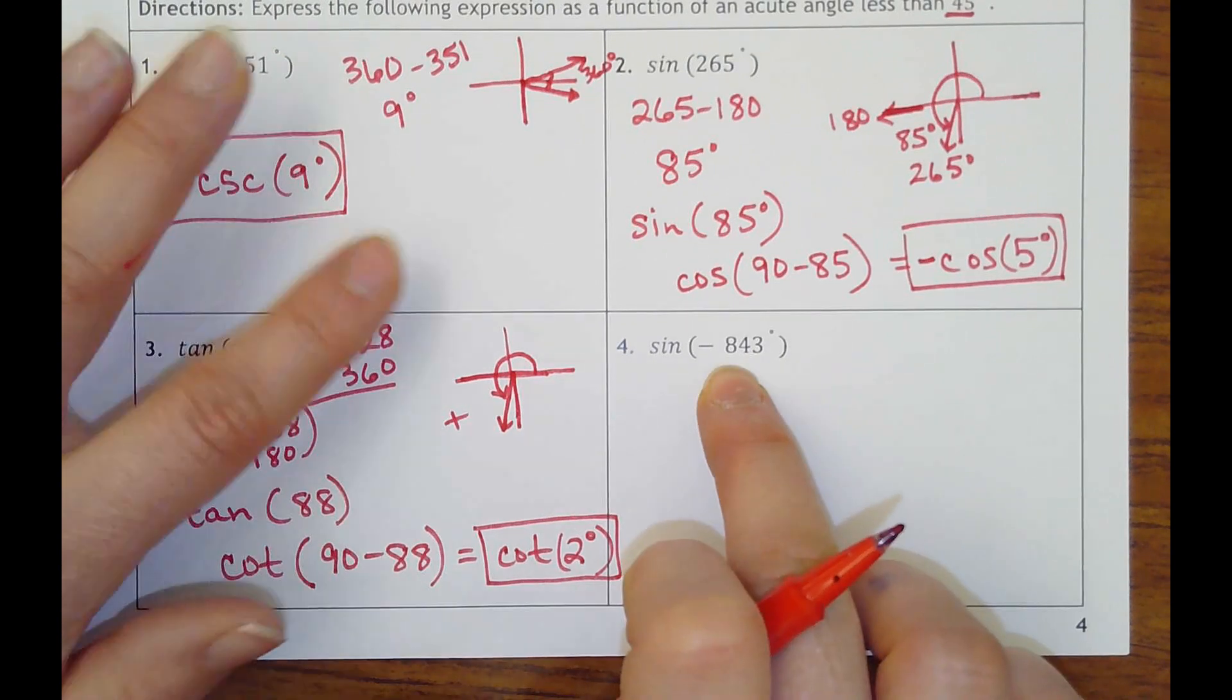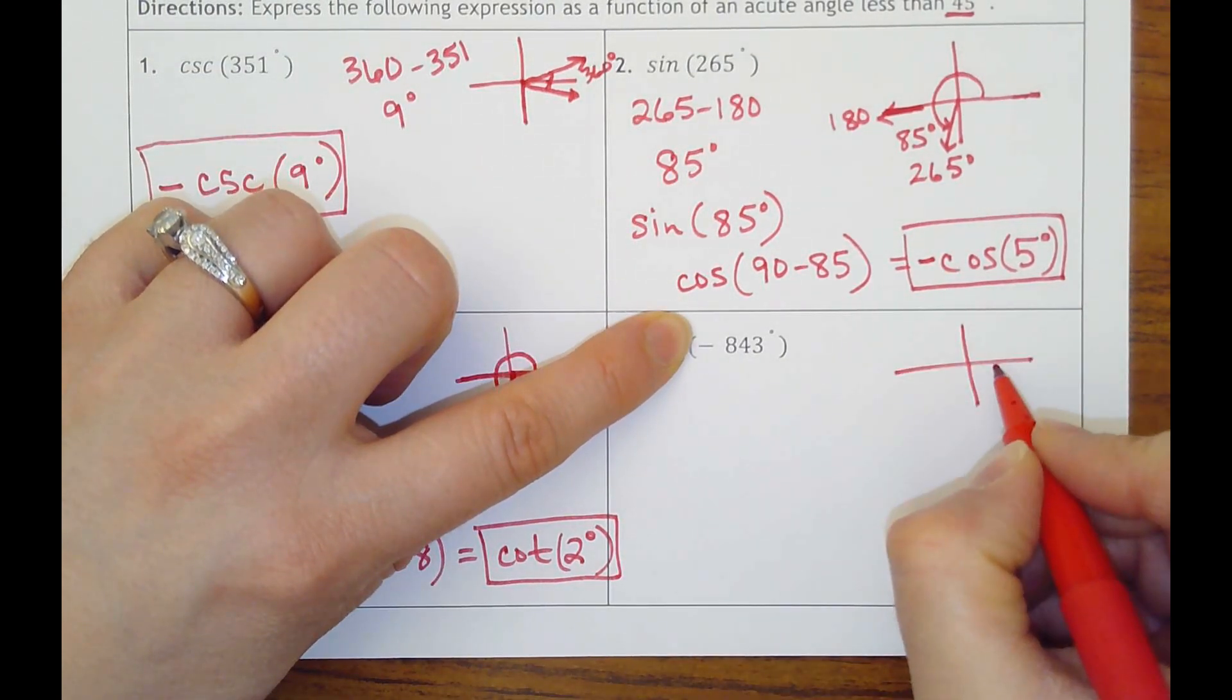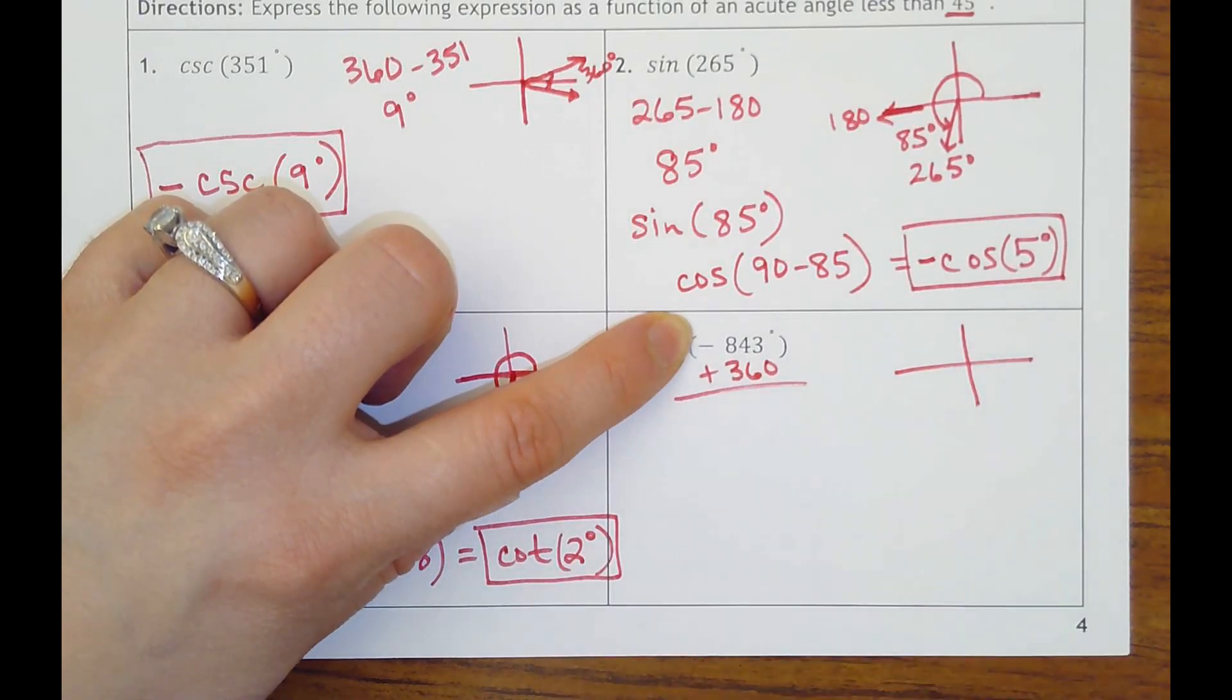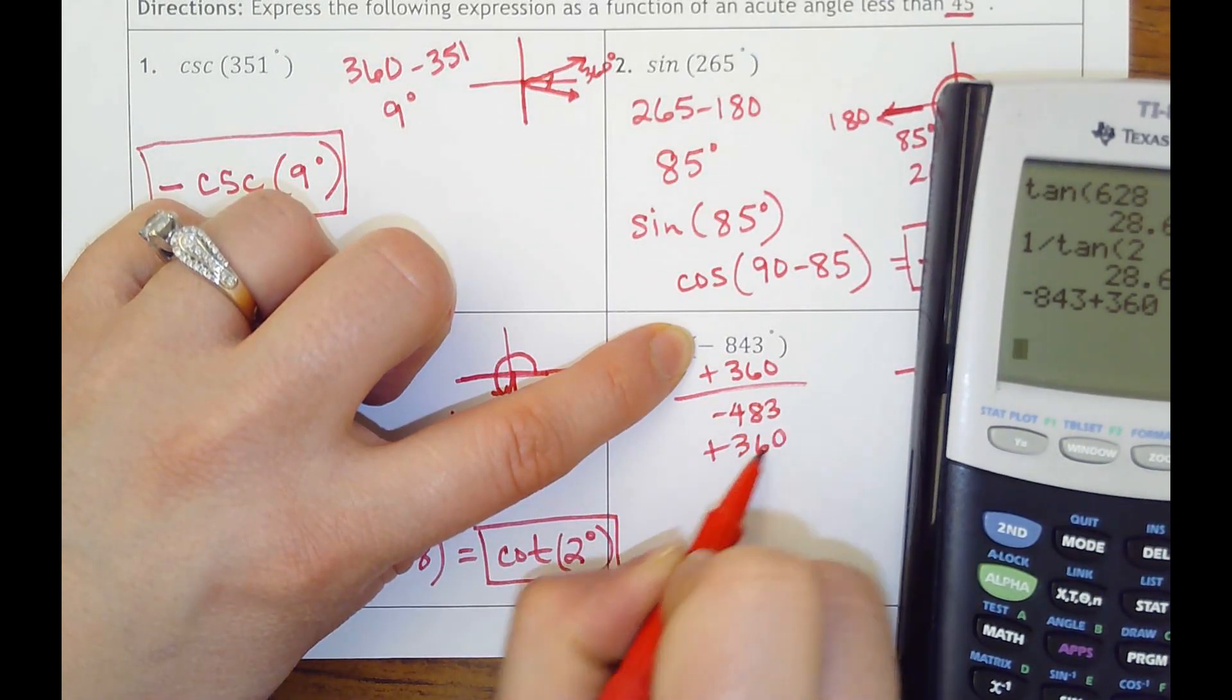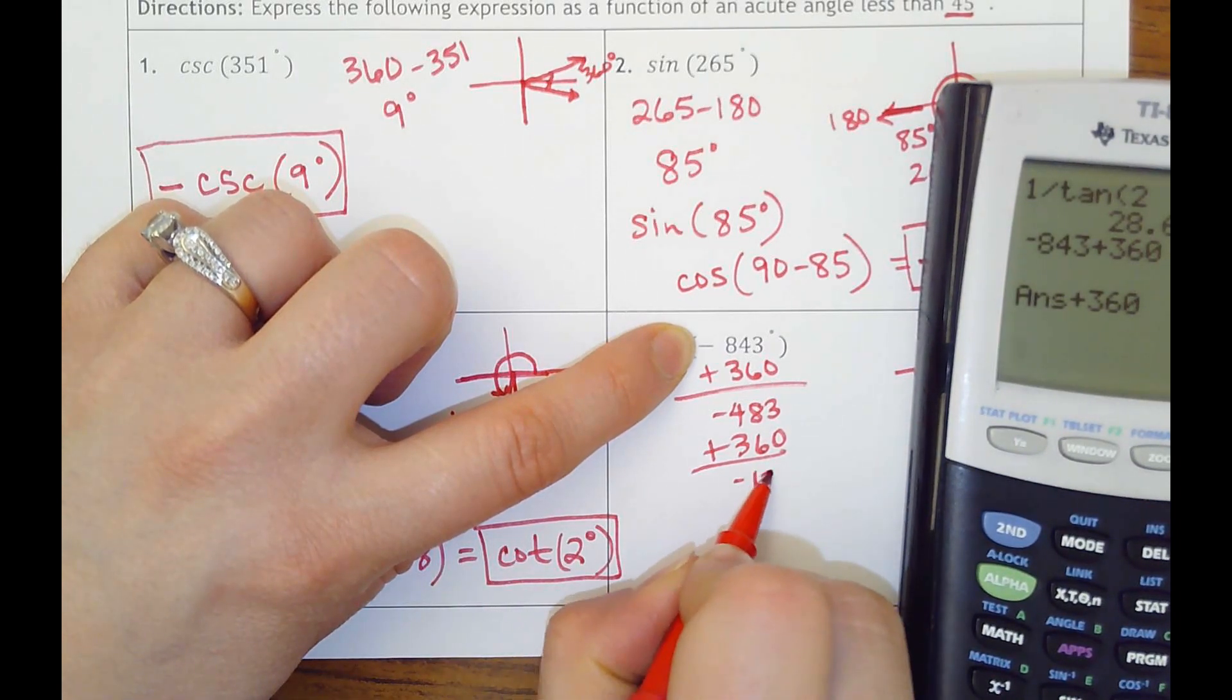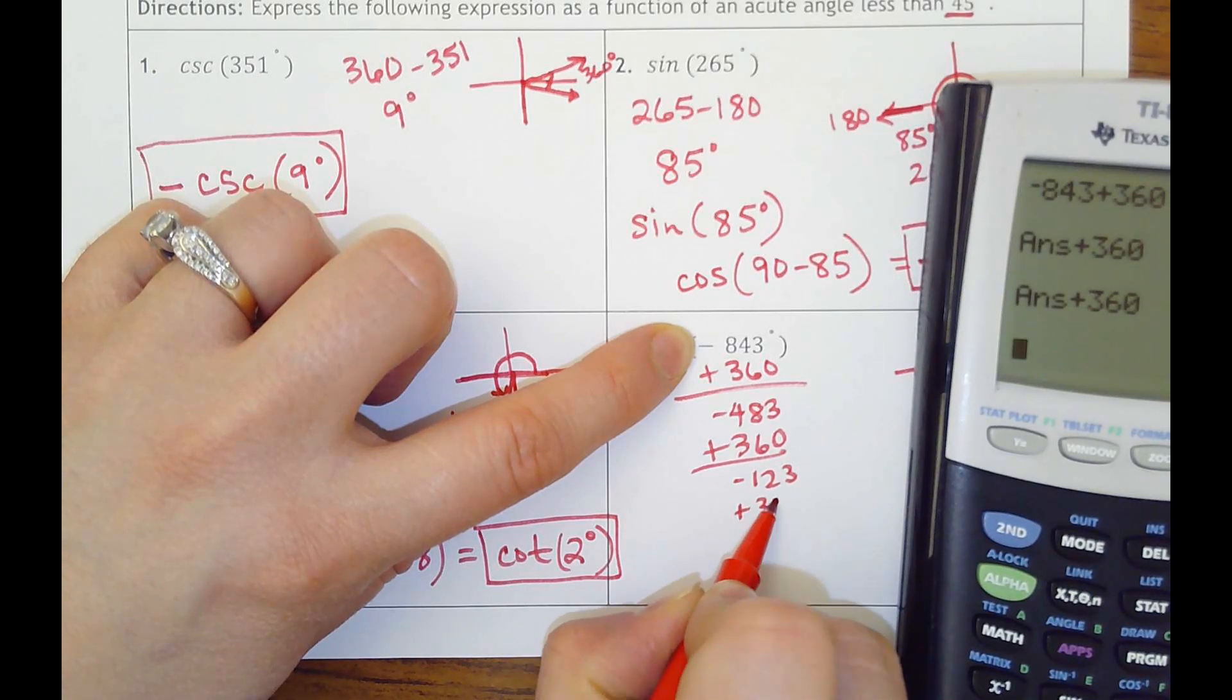And last one, this is another really big angle where it's negative. So it's actually making revolutions that go clockwise. So what I want to do is keep adding complete revolutions to it until I get a positive number. So negative 843 plus 360. And then I'm going to add it again, 360. I'm going to add it again, 237.